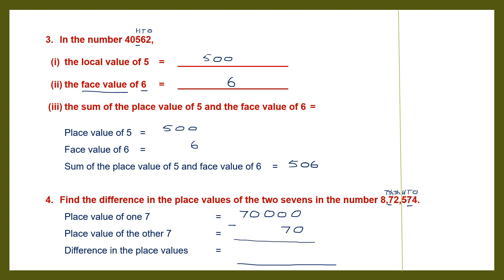Let's do that subtraction: 0 minus 0 is 0. Then 0 minus 7 — we can't do that, so we need to borrow. I borrowed, so it becomes 6, then 10. I need to borrow again, so this becomes 9 and this becomes 10. Borrow again — so this becomes 9 and this becomes 10. Now 10 minus 7 is 3, then we have 9, 9, and 6. The difference in the place values is 69,930.